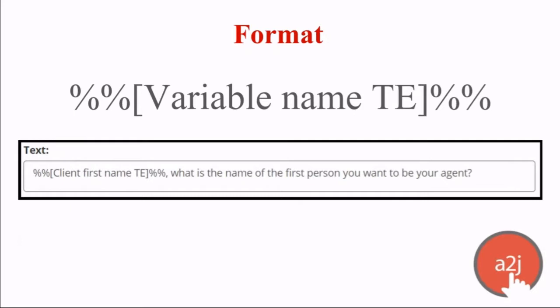The format for using a macro is fairly simple. It is wrapping a variable name in brackets and then wrapping it in double percent signs: percent sign, percent sign, open bracket, variable name, close bracket, percent sign, percent sign. You can see an exact example of that — calling out the end user's first name — as a screenshot from the text of a question. Always remember: double percent signs and always wrap the variable name in brackets.